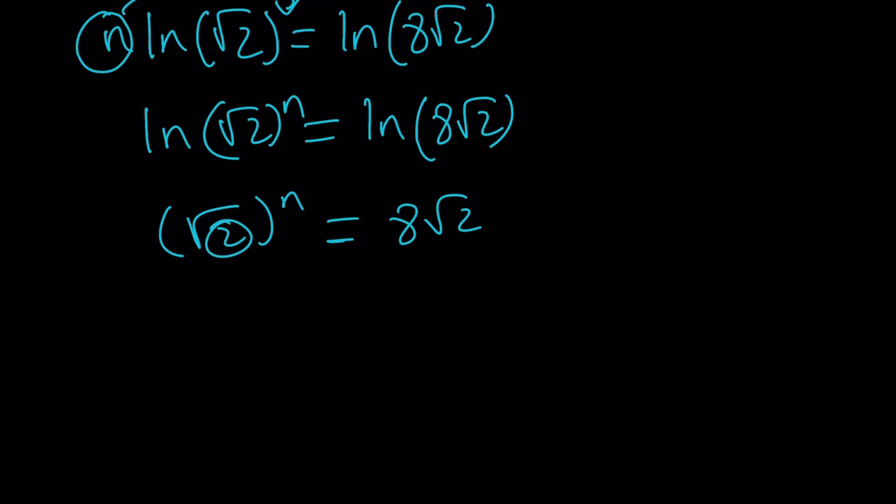You can write this as 2^(1/2). Remember, √2 is a real number. It's not complexified yet or not at all. This is 2^(1/2), so it's going to be 2^(n/2). And this is kind of like 2^3 · 2^(1/2). 3 + 1/2 = 7/2, so we can write it as 2^(7/2). By setting the exponents equal to each other, yes, I get n = 7. Isn't that awesome?